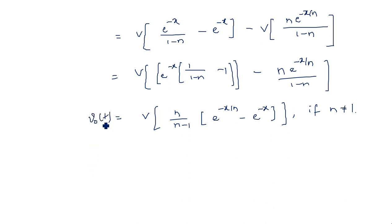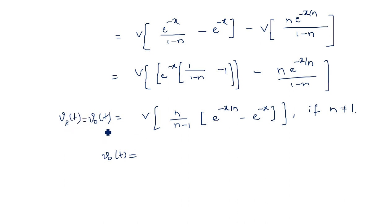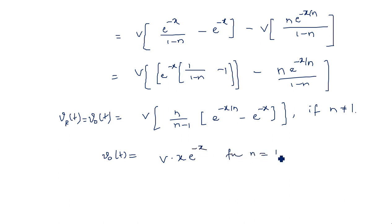Suppose if n is equal to 1, then V_out(t) or V_R(t) — both are the same — equals V·x·e^(-x). This is the special case for n equal to 1.